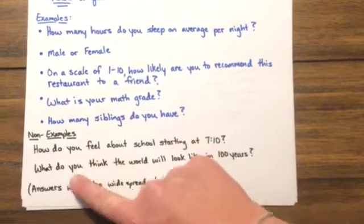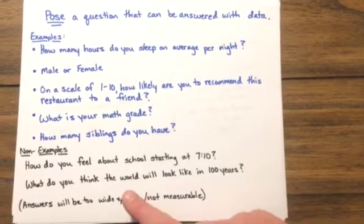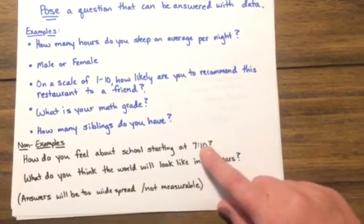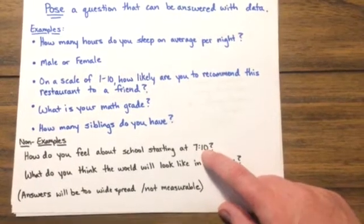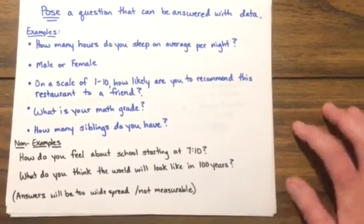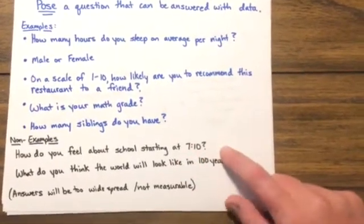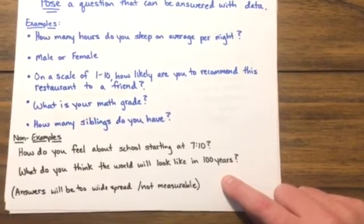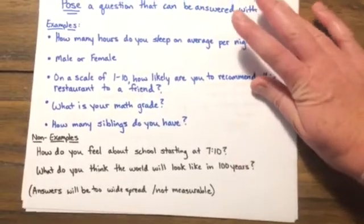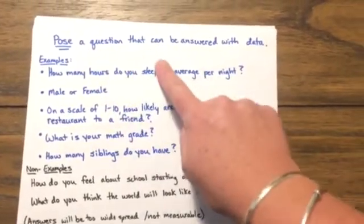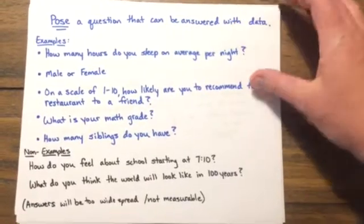A few non-examples — things that would not be able to be measured or answered with data — include: how do you feel about school starting at 7:10? People would answer that all sorts of ways, and you'd have a hard time analyzing those responses because they wouldn't give you specifics. What do you think the world will look like in 100 years? These answers will be too widespread and not something we can measure. You want to pose a question that can be answered with data — think about whether your answer is something you can tally up or measure.